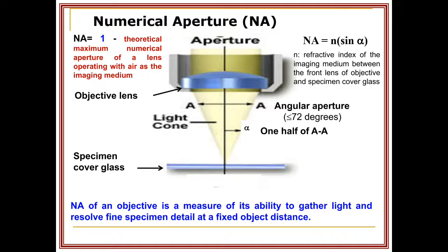As shown in the picture, alpha is one half of the angular aperture AA. The complete angle is AA, of which alpha is one half. Numerical aperture of an objective is a measure of its ability to gather light and resolve fine specimen details at a fixed object distance.